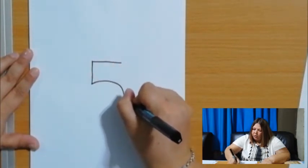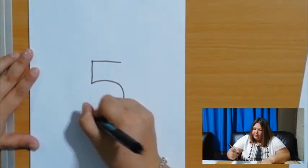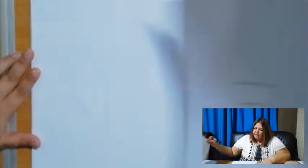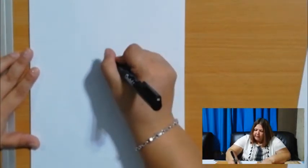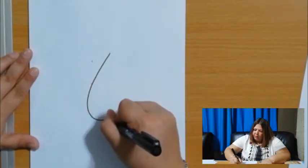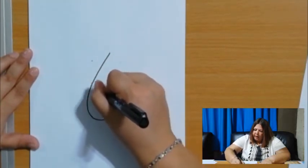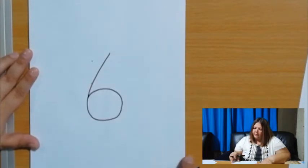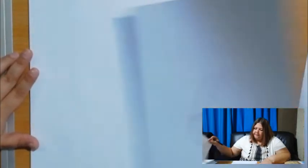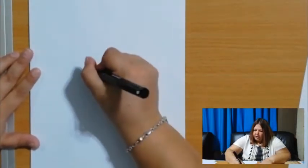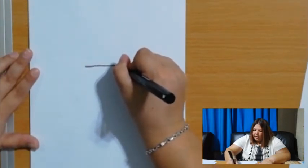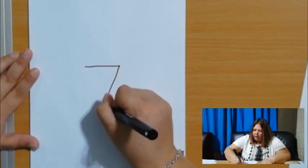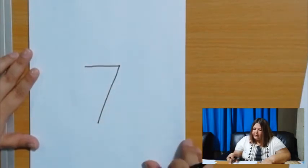Number 6, skew line down, make a little loopy at the bottom and touch the skew line. Six. Number 7, straight line to the right side and a skew line down. Seven.